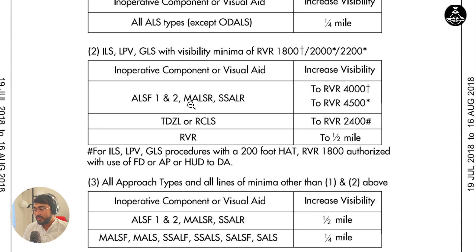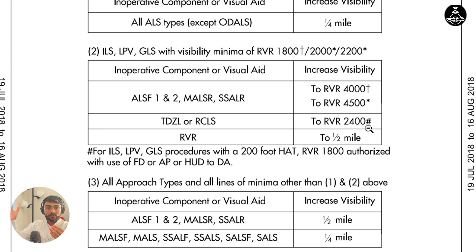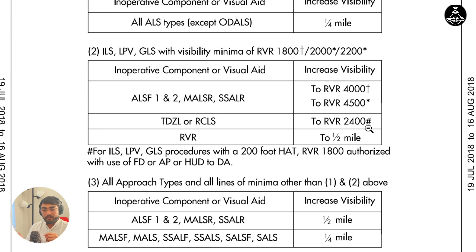For inoperative ALSF2 we saw the new minimum is 4000 feet RVR. Touchdown zone lighting says 2400. Now what we have to do is use the higher of the two. We do not add 4000 plus 2400 to get 6400 RVR — that's not practical, and we'd keep stacking up minimums until we couldn't shoot an approach. So we use the highest of the two, which is 4000. That's what the note says at the top.